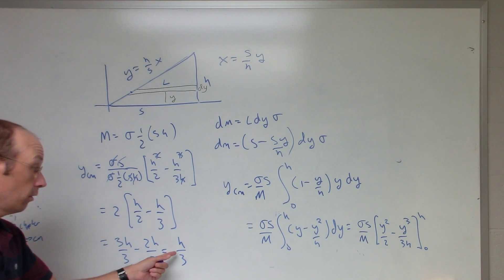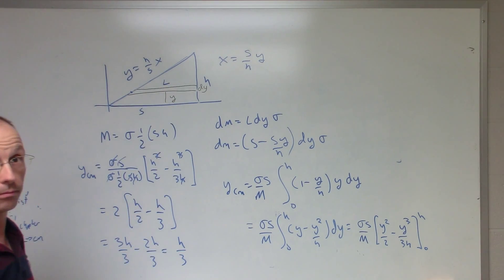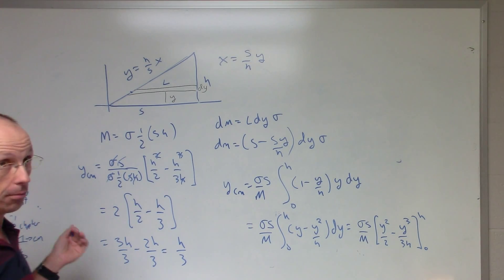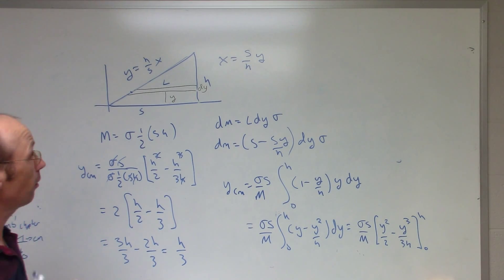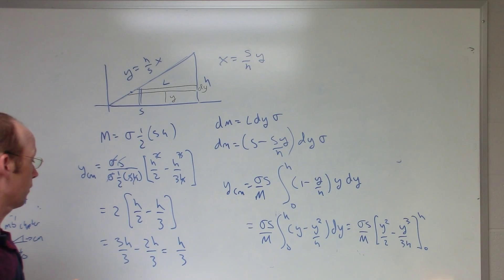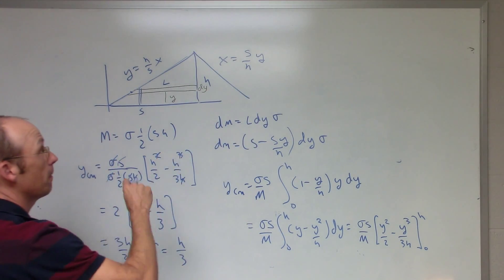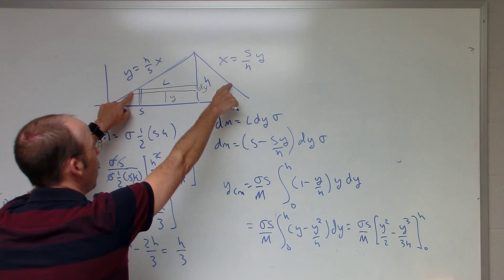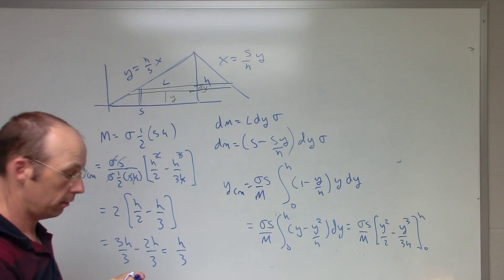So the y-center of mass is h/3 — it has units of distance, which is good. The center of mass is one-third of the way up, not halfway. For the x-center of mass, you can break the triangle into vertical strips and add those up — it's almost the same process. You can also try a non-right triangle, though in that case you'll have two functions for y to define the strip length.